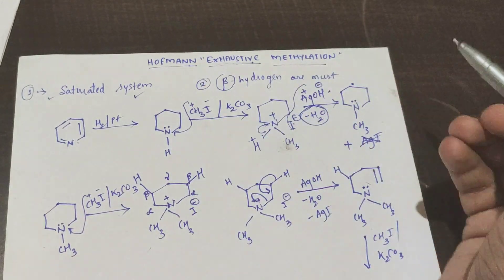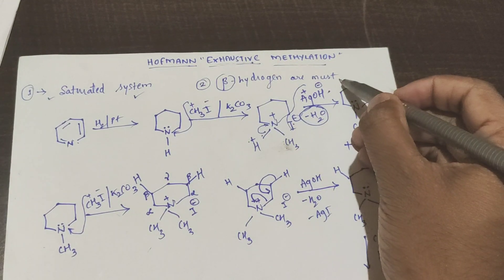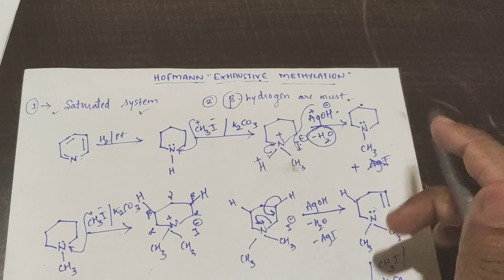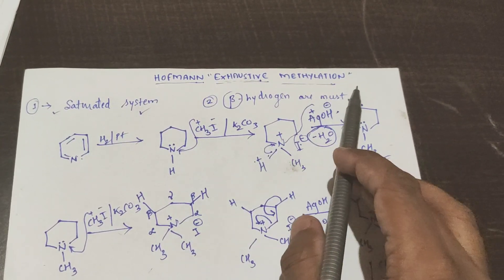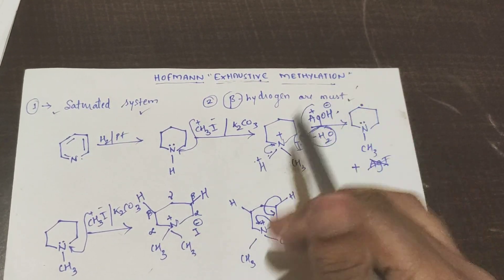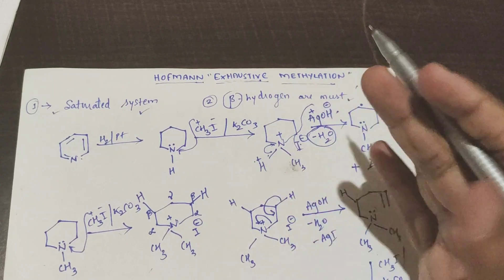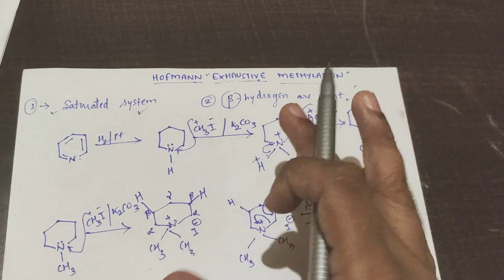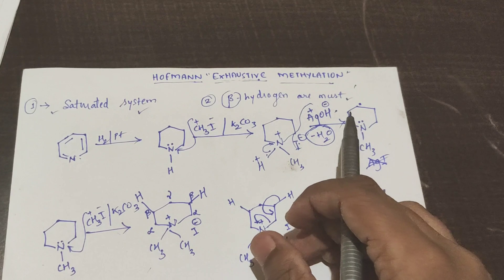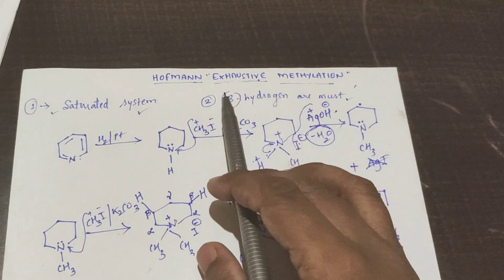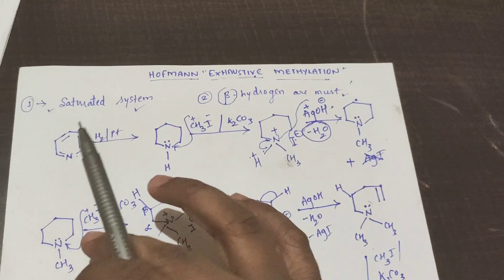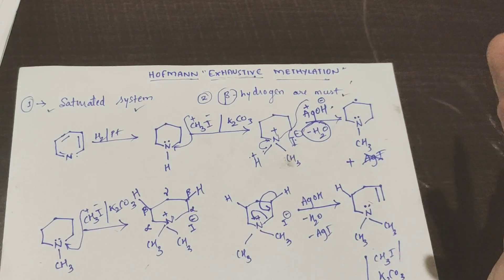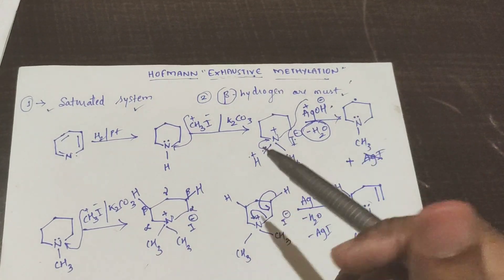So what are the requirements? One is a saturated structure — saturated system — and the other is beta hydrogens. Why do we call it exhaustive methylation? Because we are doing continuous methylation until we get the nitrogen out of the ring. We are exhausting that molecule by doing methylation, so it is called exhaustive methylation.